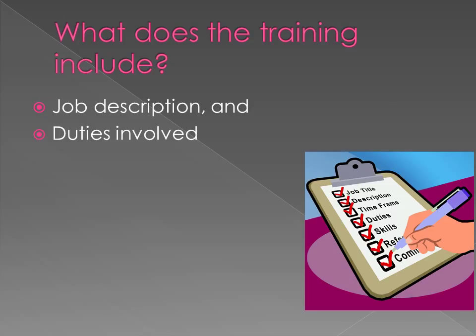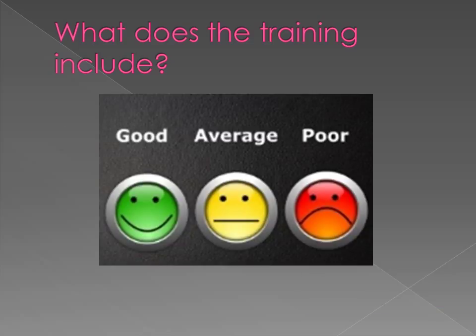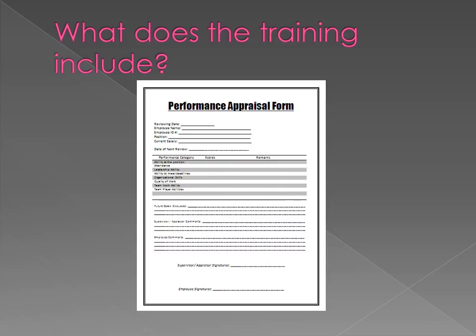What does the training include? A typical FOR training program includes a discussion of the job description for the individuals being rated and the duties involved. Raters are then familiarized with the performance dimensions to be rated by reviewing the definitions for each dimension and discussing examples of good, average, and poor performances. Raters are then asked to use appraisal forms to rate fictitious employees, usually shown in reading or videotape practice materials.